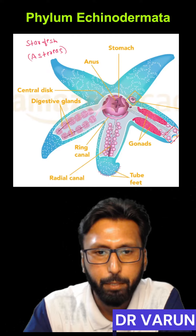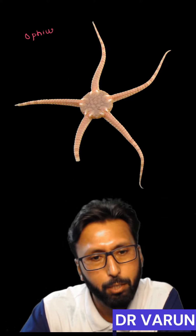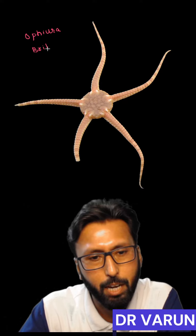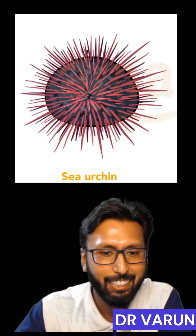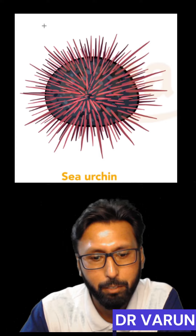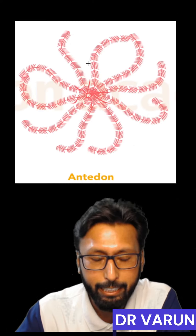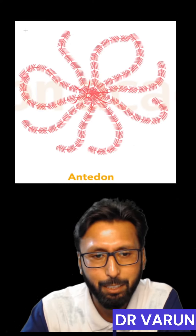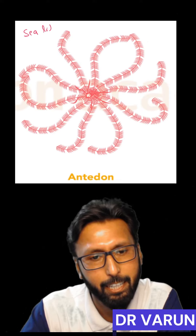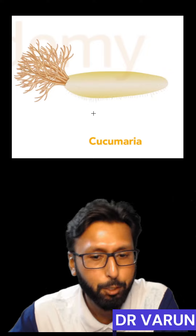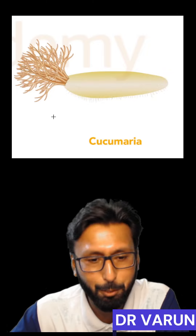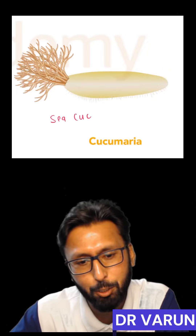A very similar example is Ophiura, also known as the brittle star. The third example is Echinus, known as the sea urchin. Then we have Antedon, which looks like a lily, so it is known as the sea lily. Finally, we have Cucumaria, which resembles a cucumber and is known as the sea cucumber.